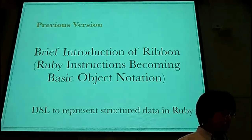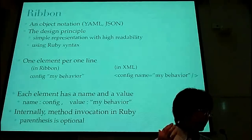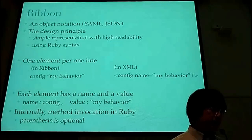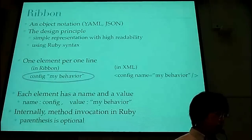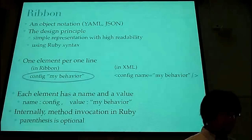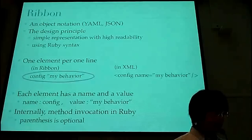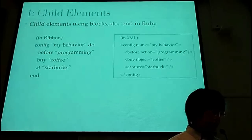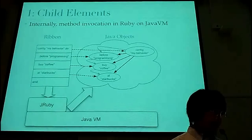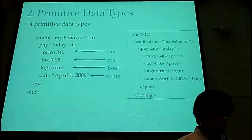I talked about the previous version called Ribbon. It's an internal DSL to represent structured data in Ruby, released about three years ago for commercial products — not open source software. Ribbon is an object notation like YAML or JSON. The design principle is to be simple for high reliability using Ruby syntax. An element has a name and value. The element is not only data representation but also a method call — in Ruby's method call, parentheses are optional. When each line of Ribbon runs in the Ruby interpreter on JVM, the method is called one by one so that Java objects can be created.